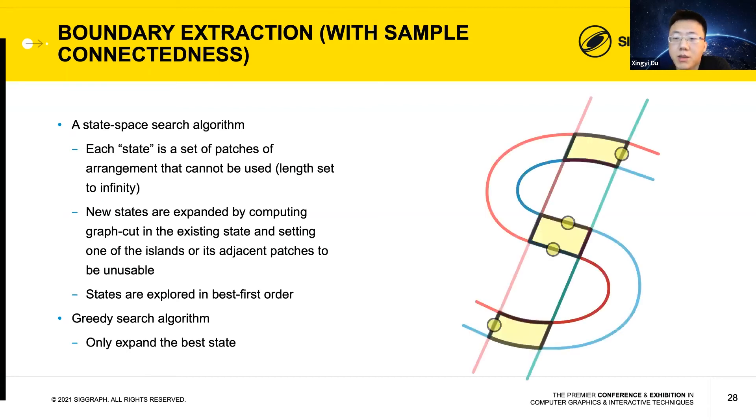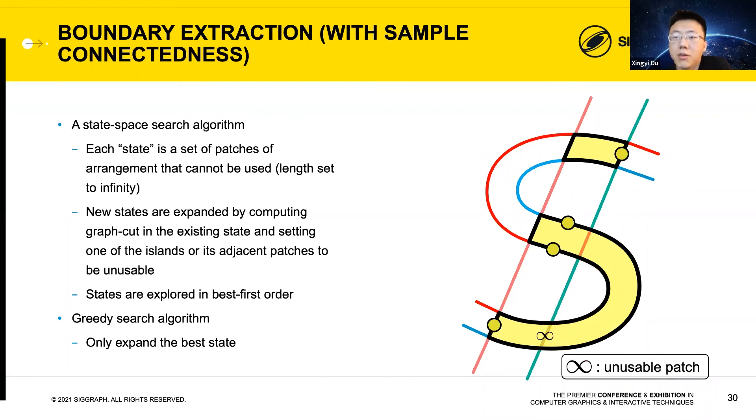We'll go through this algorithm on the S example. We expand the initial state and find that setting the lower right island to unusable will induce the least graph cut cost. Computing graph cut on this state, we get this solid shape. Now we expand this state and find that setting the upper left island to be unusable will induce the least graph cut cost. So we pick this state and compute graph cut on it. Now the result is sample-connected, so the algorithm terminates and returns the shape, which is indeed the BSH shape.